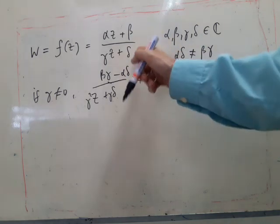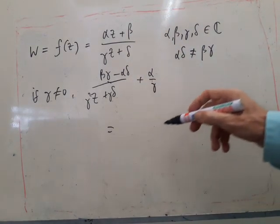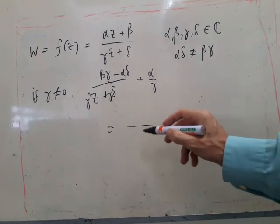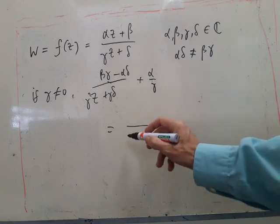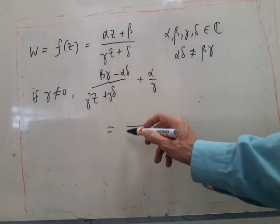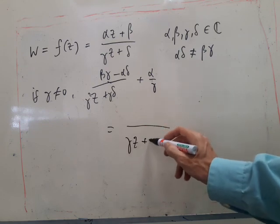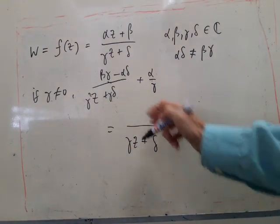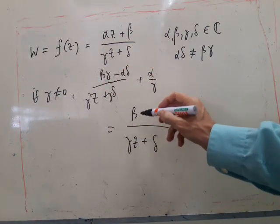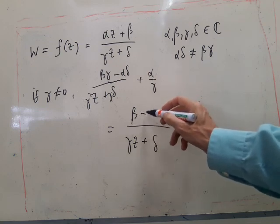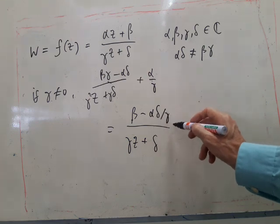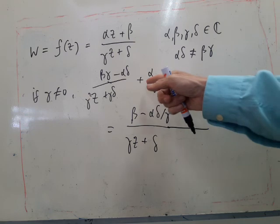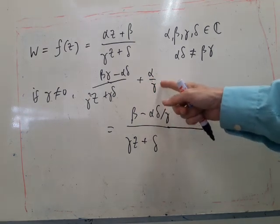This should actually give me this, so let's try that. Well, the bottom is looking good. I'll take out a factor of gamma, and then use that to get the beta on top. And then I've got minus alpha delta over gamma, and then I'm adding alpha over gamma.